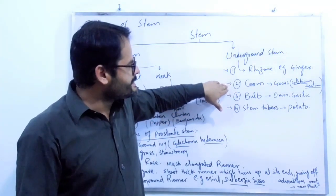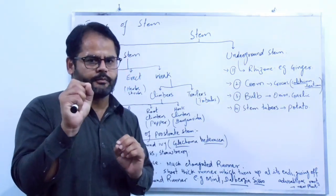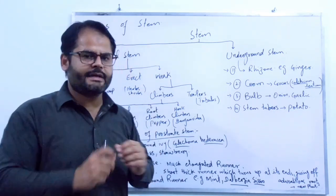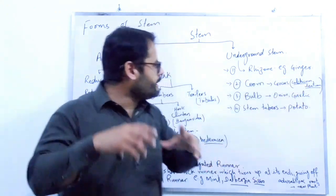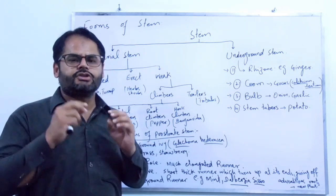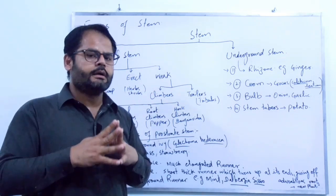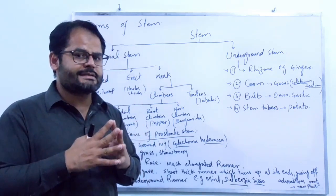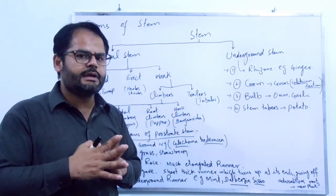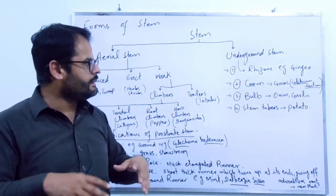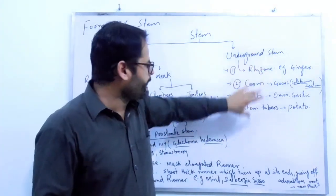The second underground stem type is called corm. A corm is basically a condensed rhizome. The example of corm is Crocus or Colchicum luteum. Corms have shortened nodes and internodes, and upon the nodes are certain scale-like leaves which later develop into foliage leaves. From the nodes also arise adventitious roots.